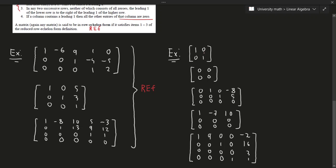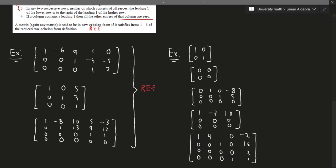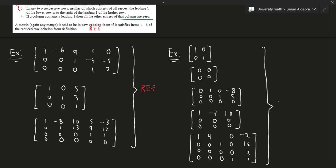For these RREF examples, all entries above and below each leading 1 are indeed 0. In cases where there are rows of all zeros, condition 4 doesn't really apply. This is not a leading 1 because it doesn't satisfy the positional requirement. So yes, these are all in reduced row echelon form — sometimes also pronounced as row reduced echelon form.